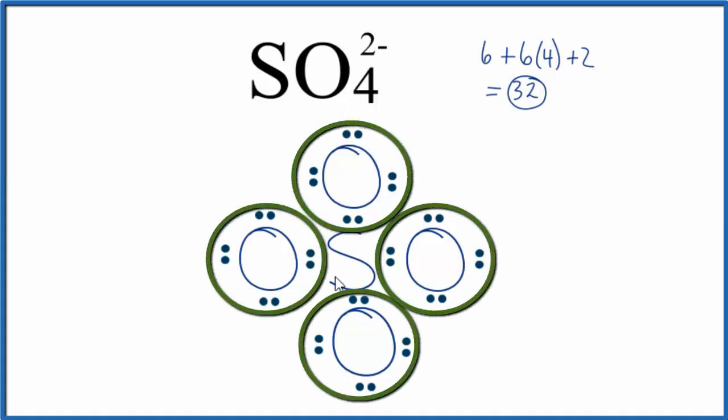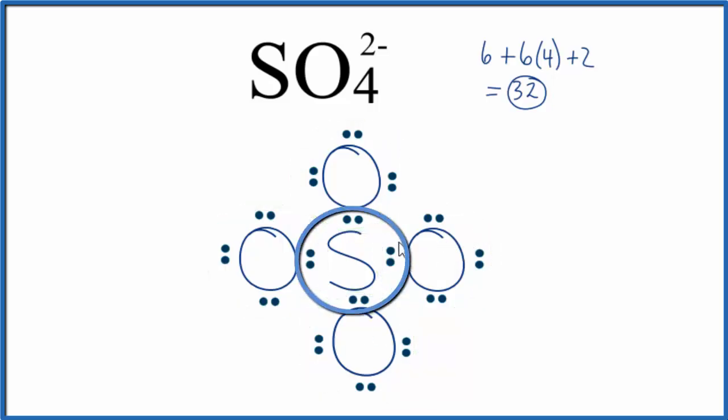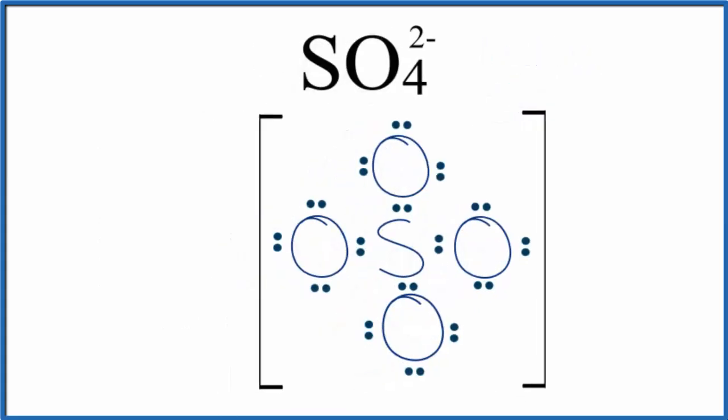Each oxygen atom has 8 valence electrons. So each oxygen has an octet. The sulfur in the center has an octet as well. So this is a pretty good Lewis structure for SO4 2-. Let's put brackets around it and that negative sign out there since it is an ion. Then we'll put a 2- out there to show the ionic charge.